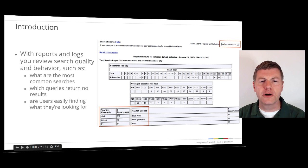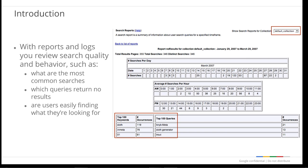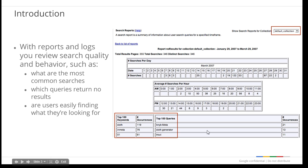Before you can improve search, you have to understand what needs to be improved. To find this out, you have to learn what people are searching for and whether they're finding it. Search reports and raw search logs let us understand search quality and user behavior. What are people looking for? Are they finding anything? Are they finding what they're looking for? Basic search reports can tell us when people are searching and what keywords and queries they're using. We have access to more detailed search information through logs and advanced search reports.